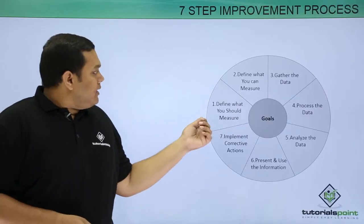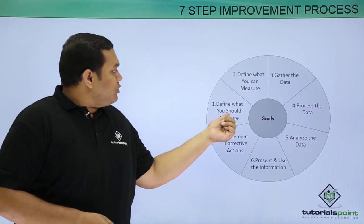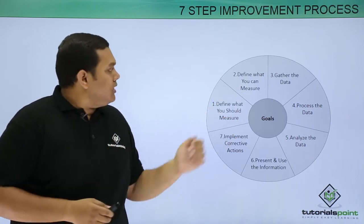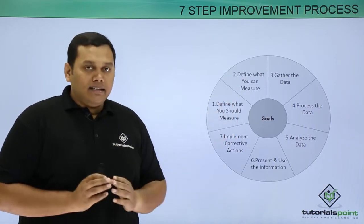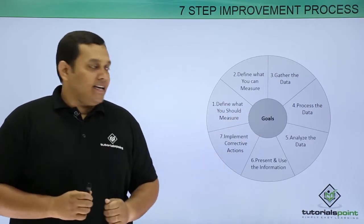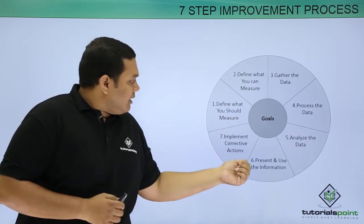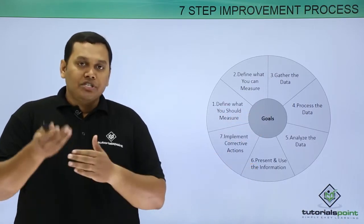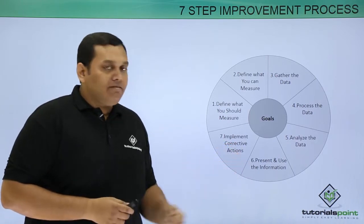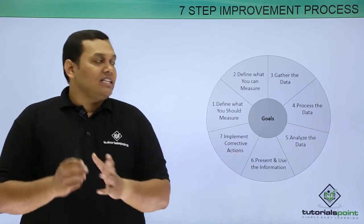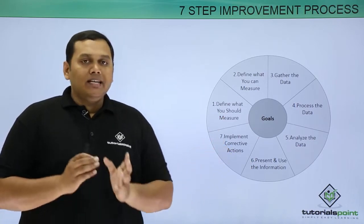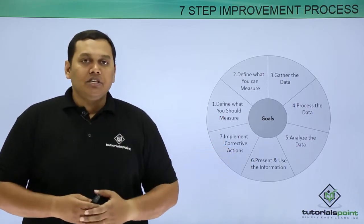The 7-step improvement process consists of: define what you should measure, define what you can measure, gather the data, process the data, analyze the data, present and use the information available after analyzing, and implement corrective actions. These are the 7 steps in continual service improvement.